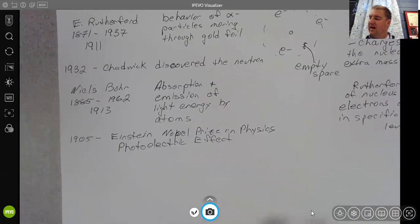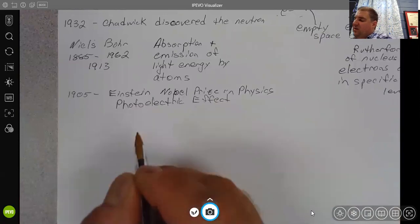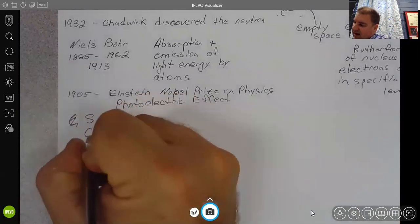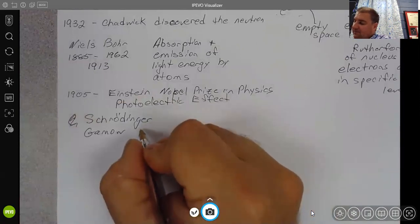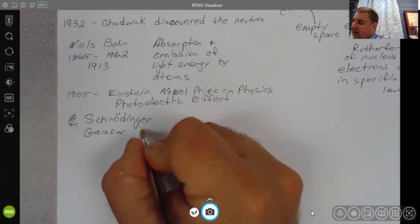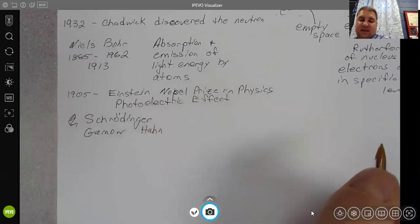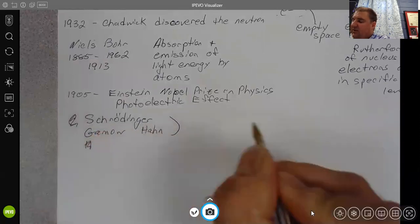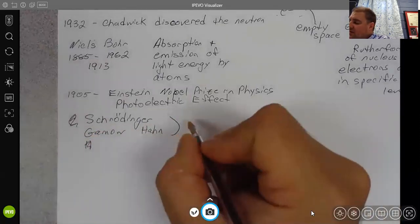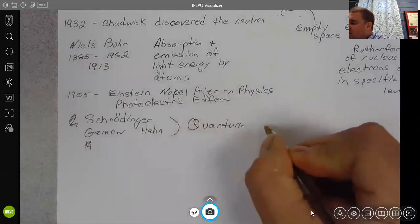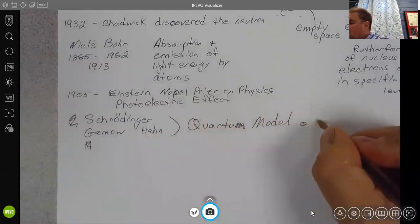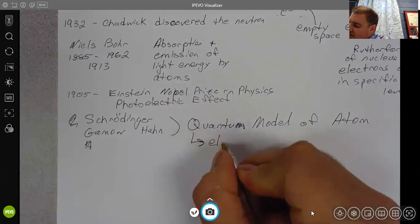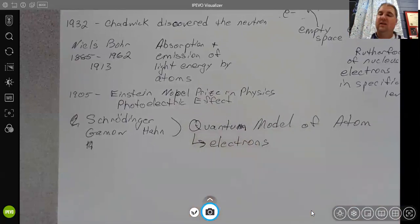After Bohr, then of course we've got Einstein who was working on this at the same time. We've got Schrodinger, Gamow, Otto Hahn. We've got all kinds of physicists and chemists. And what they really come up with post 1913 is the quantum model of the atom. And we'll be exploring the quantum model of the atom more in depth when we start talking specifically about electrons. So that's going to be a later unit.